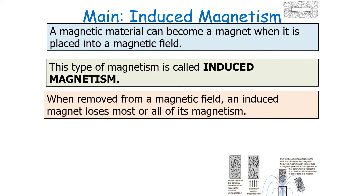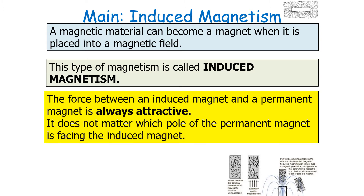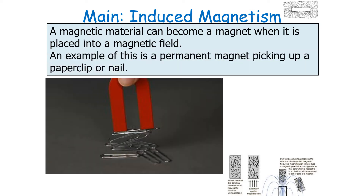Another important idea regarding induced magnetism is that the force between an induced magnet and a permanent magnet is always attractive. It doesn't matter which pole of a permanent magnet is facing an induced magnet — you will always get an attractive force between the two. An example of this is a permanent magnet picking up a paper clip or a nail.